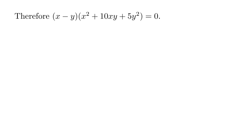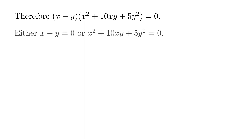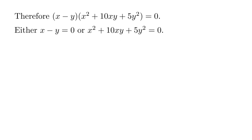Taking out (x − y), we have (x − y)(x² + 10xy + 5y²) = 0. There are two cases: either x − y = 0, or x² + 10xy + 5y² = 0.